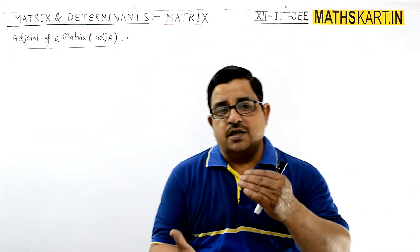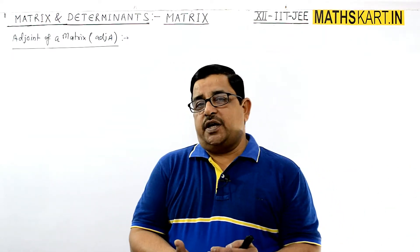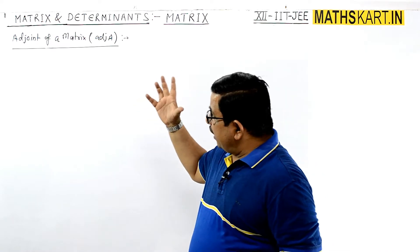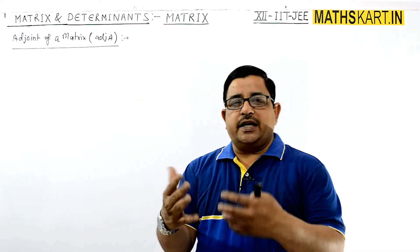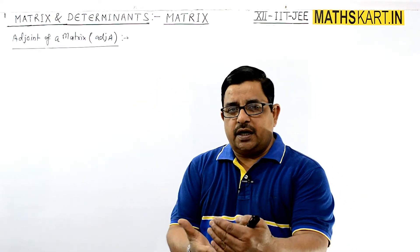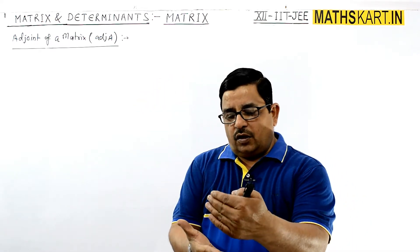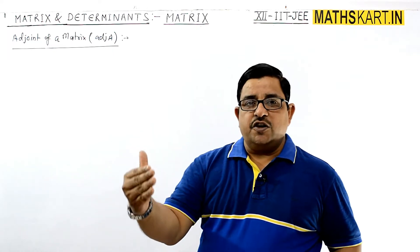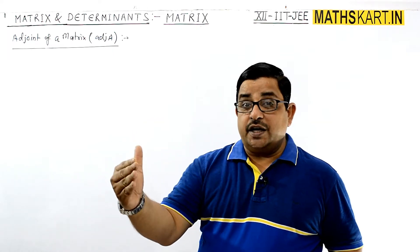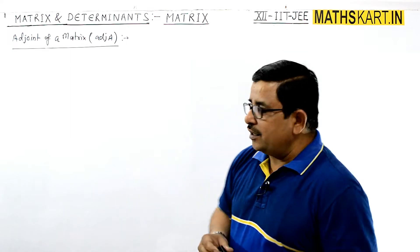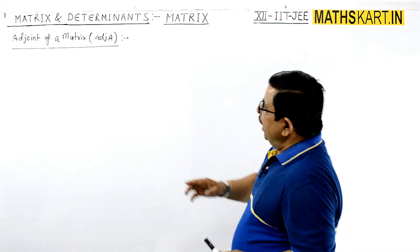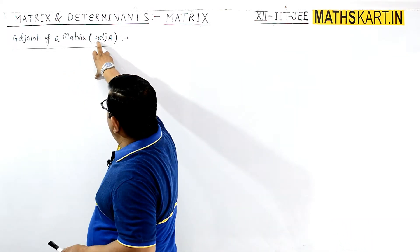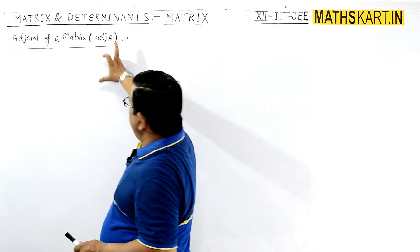Morning friends. The next application is the adjoint of a matrix. Finding the adjoint of a matrix is important, and after this we will find out the inverse of any matrix A. The adjoint of matrix A is written as adj A.